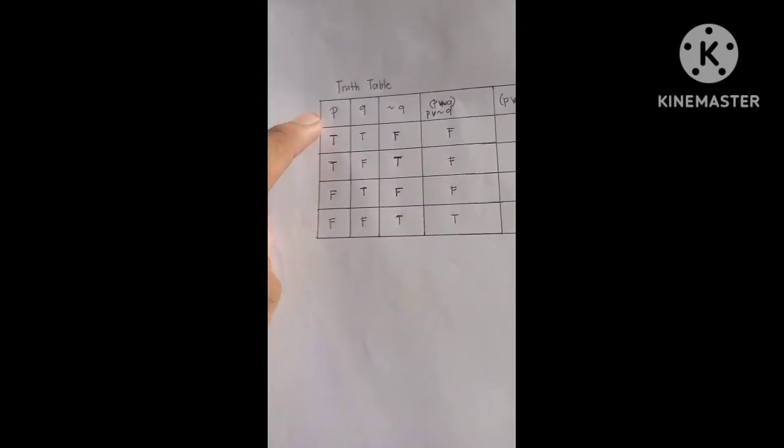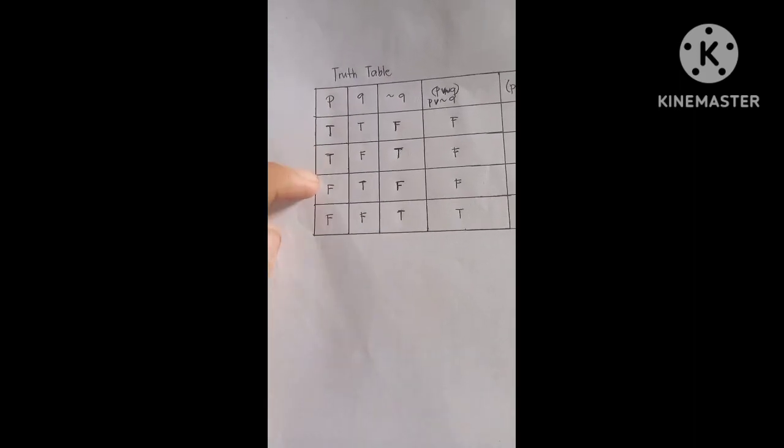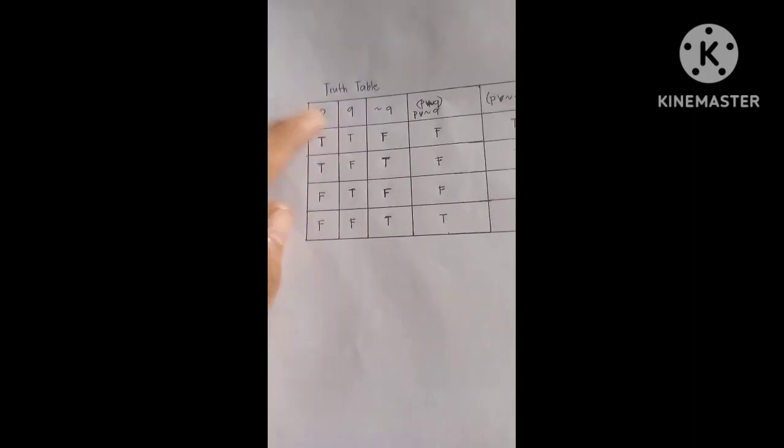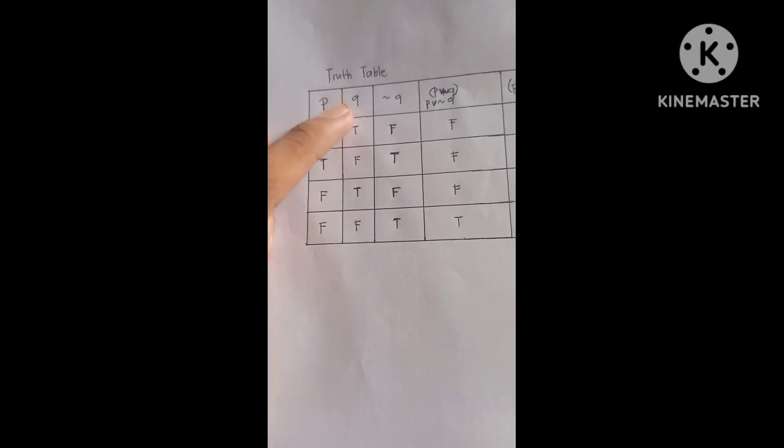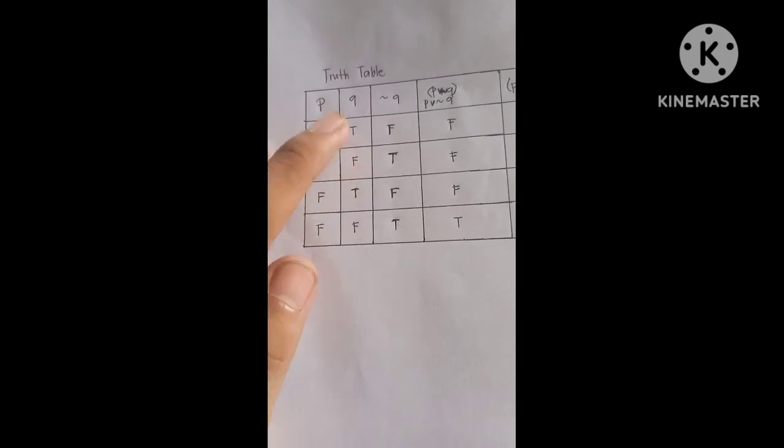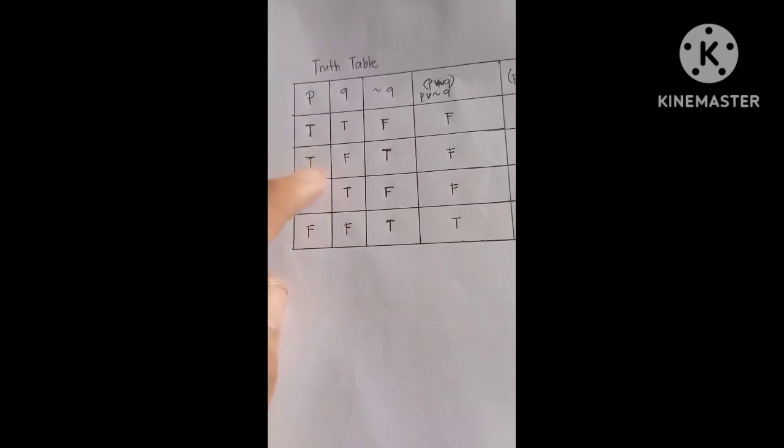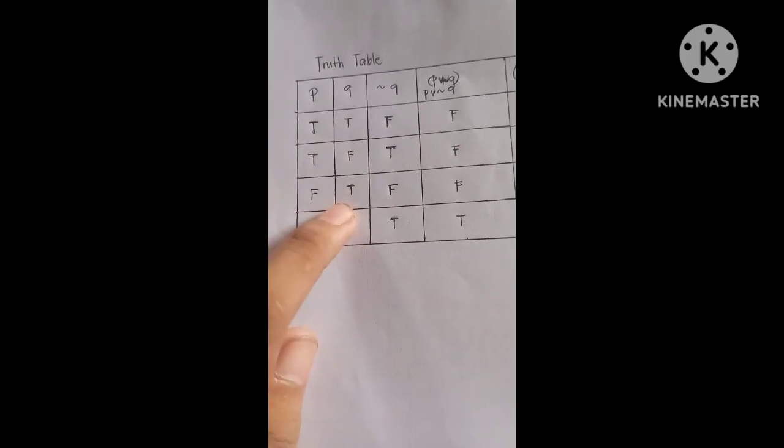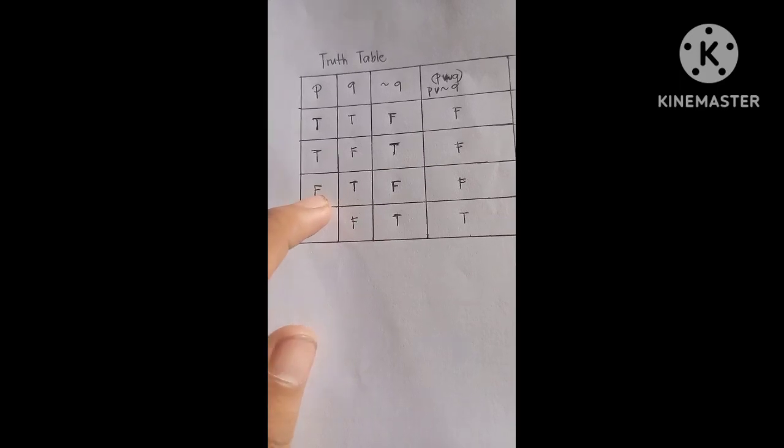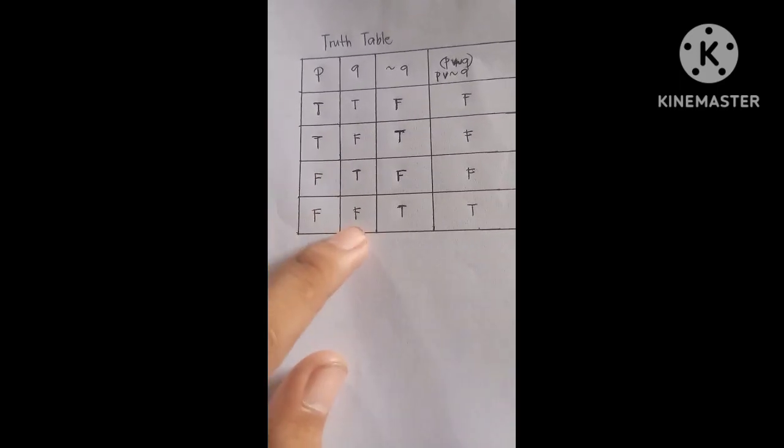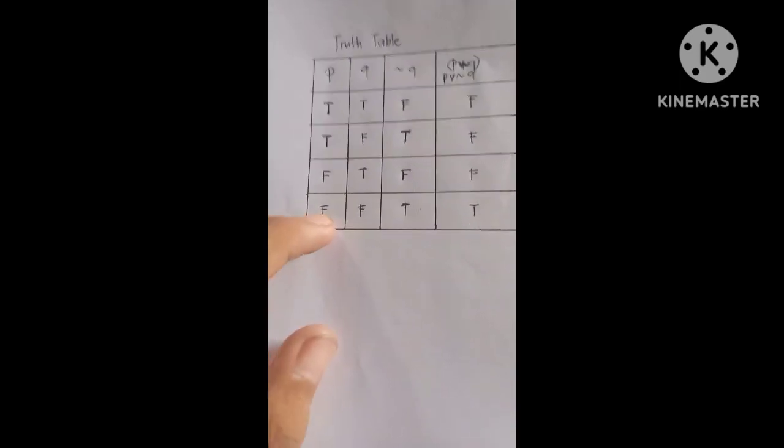So our P have 2 true and 2 false. And our Q has 1 true for the true of P, false for the true of P, and then true for false of P, and false for false of P.